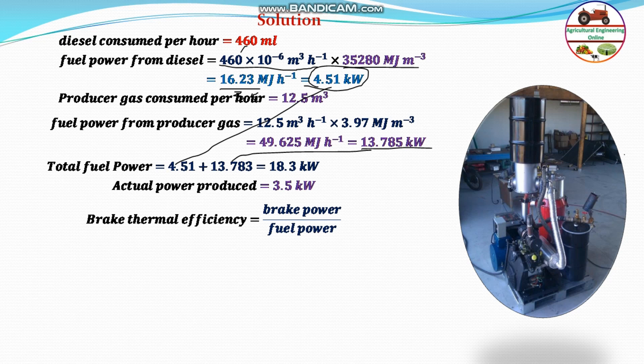The brake thermal efficiency equals brake power divided by fuel power. Fuel power input is 18.3 kilowatt and actual power produced is 3.5 kilowatt. Therefore, dividing 3.5 by 18.3 and multiplying by 100 gives 19.13 percent, which is the brake thermal efficiency of the engine. This is the answer for the first part.